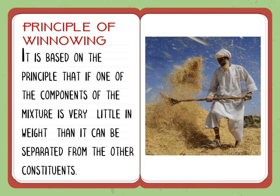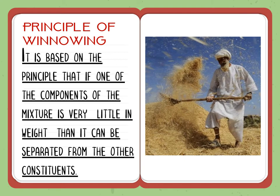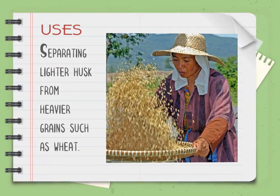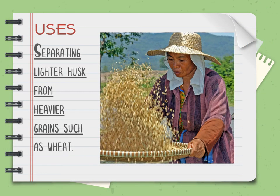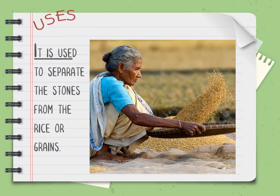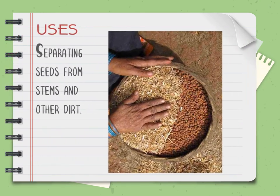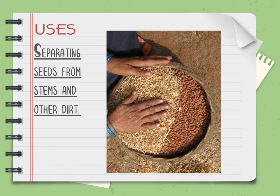Uses in daily life: it is based on the principle that if one of the components of the mixture is very light in weight, it can be separated from the other components. The lighter chaff is blown away with the wind. It is used to separate the stone from the rice or grains. The heavier grains fall straight down and get separated.